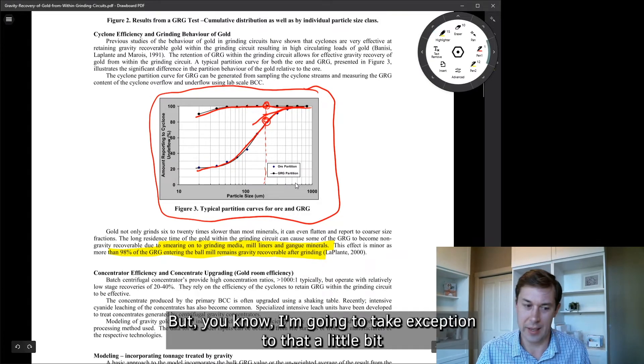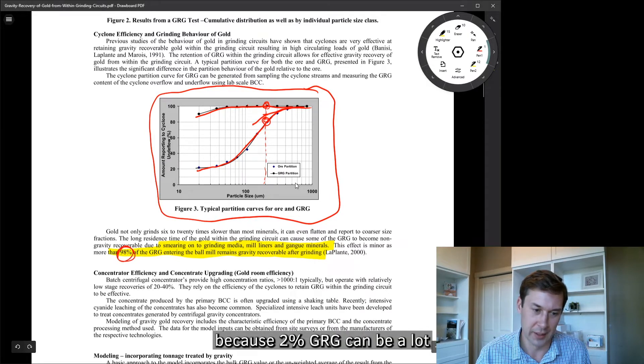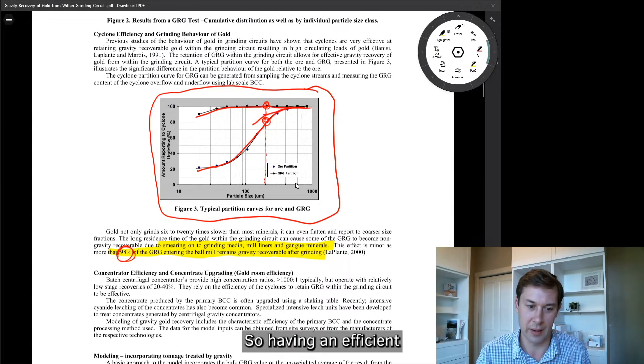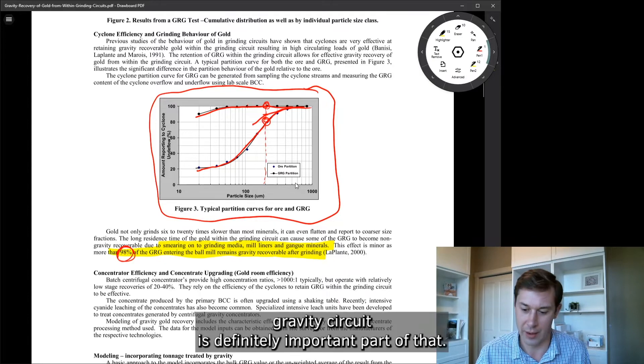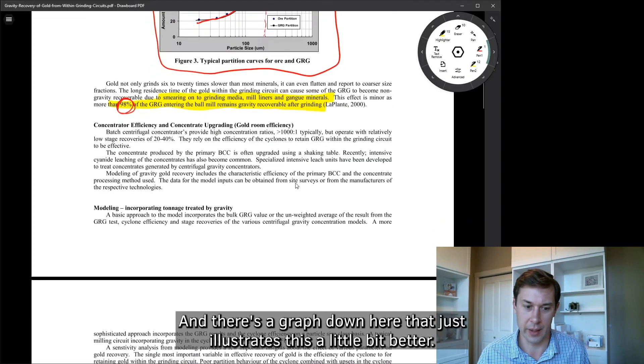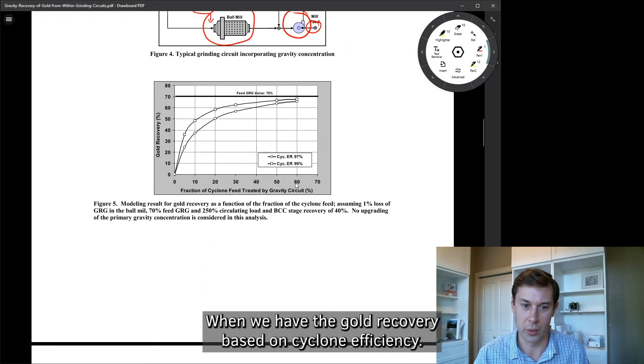Now, the paper says this effect is minor, as more than 98% of GRG entering the mill remains gravity recoverable after grinding. But I'm going to take exception to that a little bit because 2% GRG can be a lot if you've got a high GRG ore, and you certainly don't want to lose that. So having an efficient gravity circuit is definitely an important part of that.